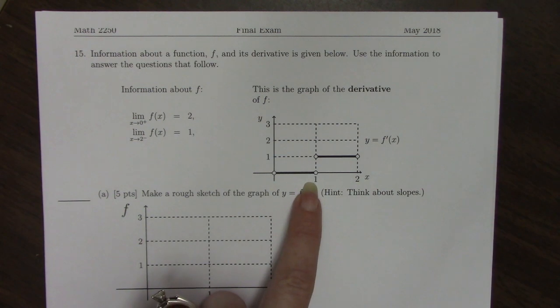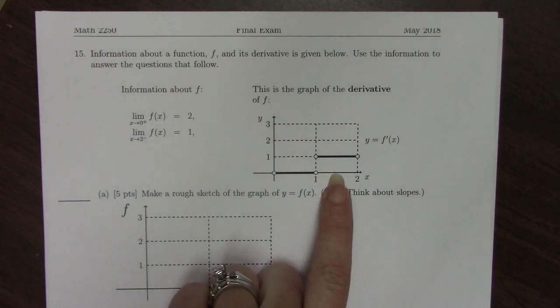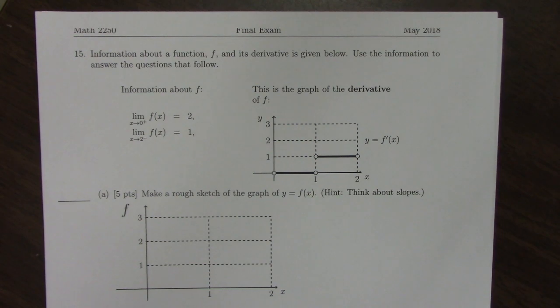Between 0 and 1, the derivative is 0, which means there's a constant function here in the form of a horizontal line, because horizontal lines have slope 0. From 1 to 2, the derivative is 1 everywhere, so you're going to have a line of slope 1.